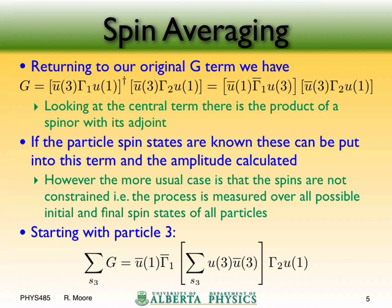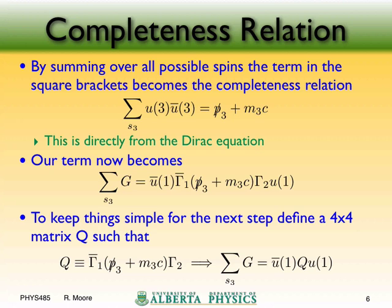This result — which you'll be proving in the assignments — is called the completeness relation. If you sum over all possible spin states, solutions to the Dirac equation, what you end up with is essentially the Dirac equation itself: the sum over spins of u3 u-bar-3 equals P3-slash plus M3c, where the slash notation means gamma-mu P3-mu. This is our Dirac slash notation introduced last time.